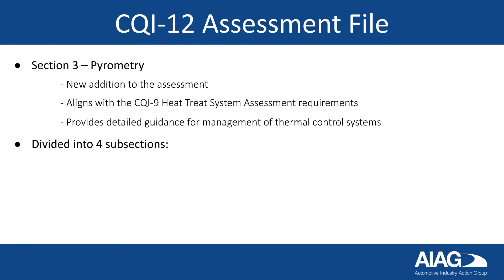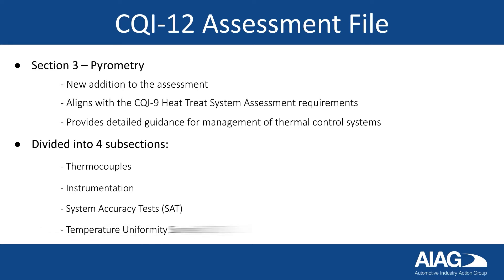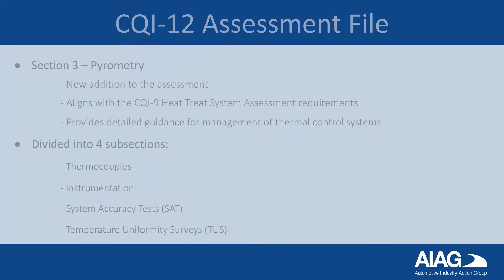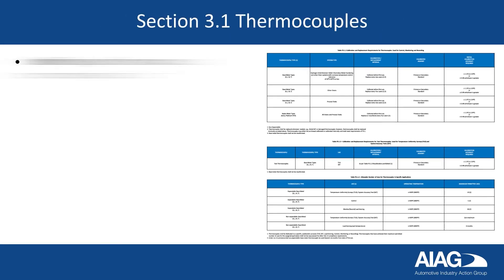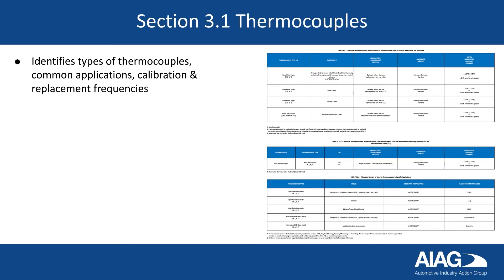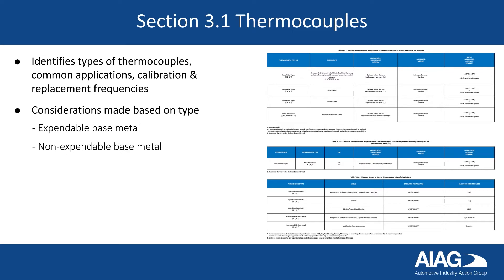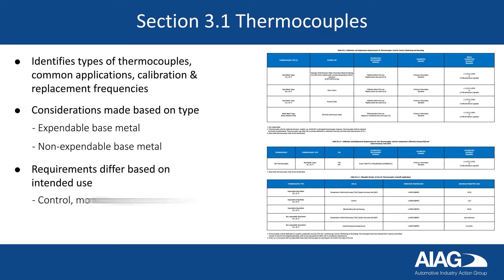It is divided into four subsections: thermocouples, instrumentation, system accuracy tests, and temperature uniformity surveys. Section 3.1 identifies types of thermocouples, common applications, calibration frequencies, and replacement frequencies. Considerations are made based on the type of thermocouple, which can be expendable or non-expendable base metals. Requirements differ based on the intended use so that more critical operations are more tightly controlled.